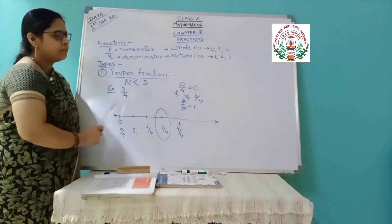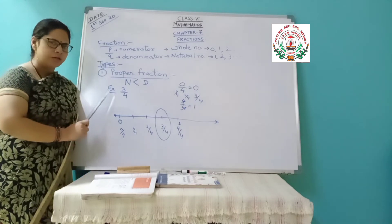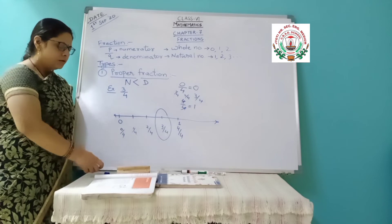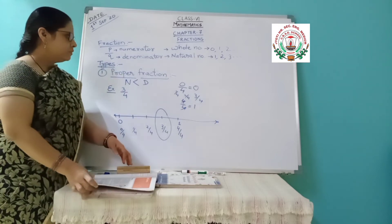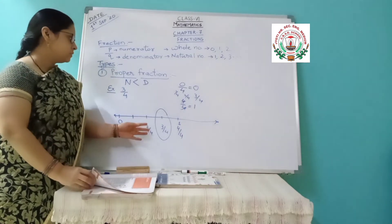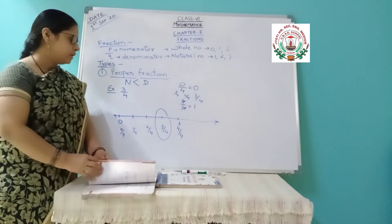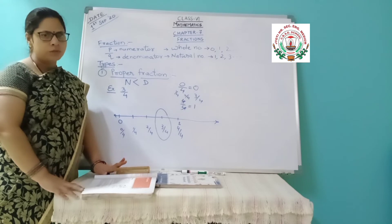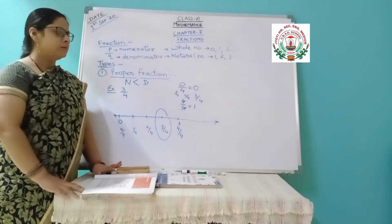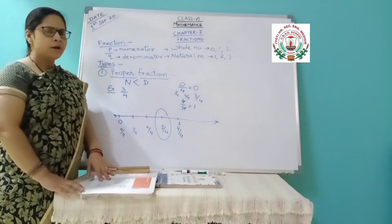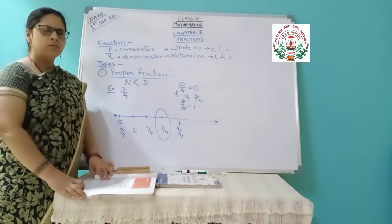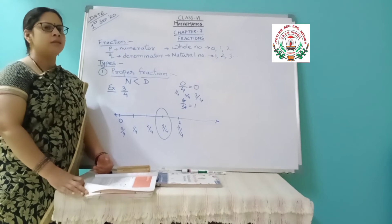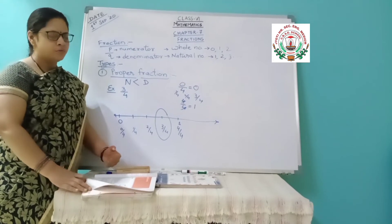So I have completed plotting the proper fraction on the number line. Next we will see the improper fraction — where the numerator is greater than the denominator — in the next class. By that time you will complete your workbook which I have given as work, and the introduction part we will get through PDF, but not now — after completing the first exercise only I will be giving them. Till then thank you for today's class.